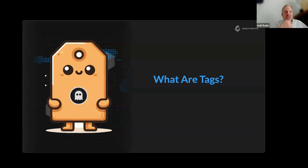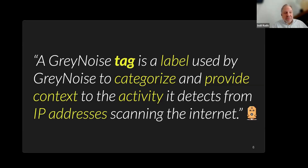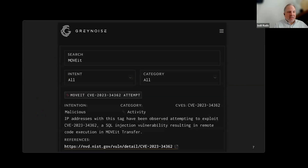Let's start off with what GrayNoise tags actually are — definition time. A GrayNoise tag is a label used by GrayNoise to categorize and provide context to the activity it detects from IP addresses scanning the internet. That's really dry, dull, and boring. It does tell you what it is, but a picture's worth a thousand words.